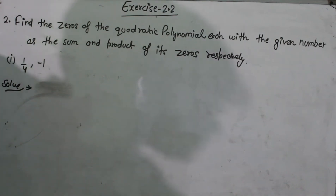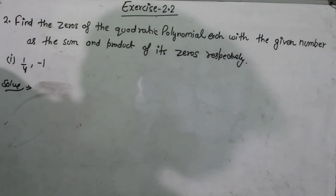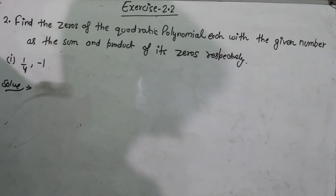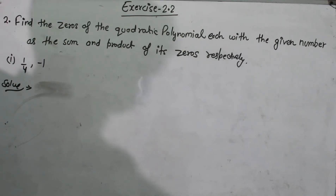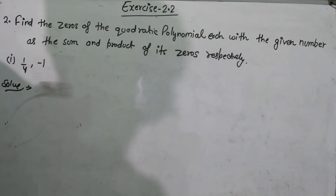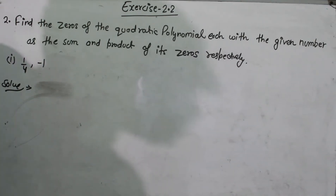Welcome to my YouTube channel Maths Class. Today we are going to solve the question of exercise 2.2, question number 2: Find the zeros of the quadratic polynomial, each with the given number as the sum and product of its zeros respectively. We have to form a quadratic polynomial from the numbers given if the sum or product is given.